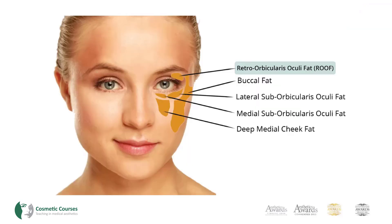The first is the retroorbicularis oculi fat, or ROOF. This is found over the superolateral orbital rim. It contributes to the fullness in youth and heaviness in ageing of the lateral brow and lid.